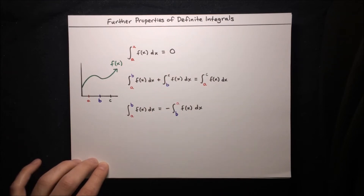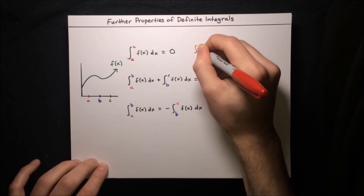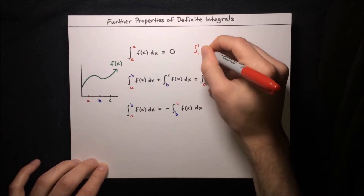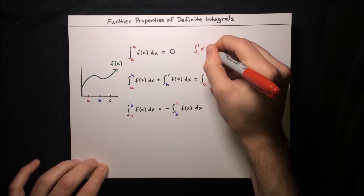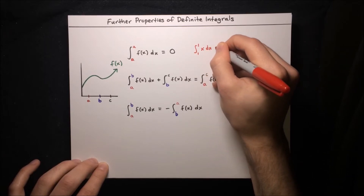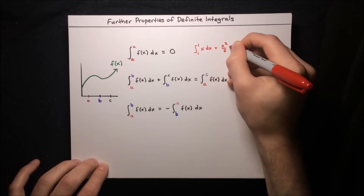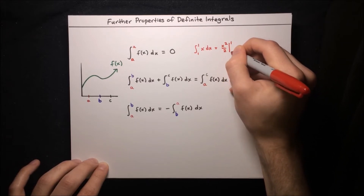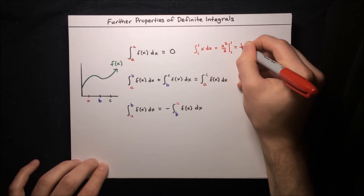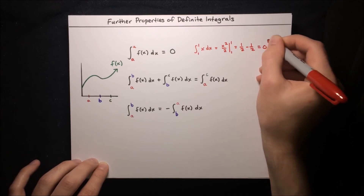One way to see this is just to do an example. For example, the integral from one to one of f(x) = x dx is equal to x squared over two evaluated at one and one, and subtracted, so one half minus one half equals zero.